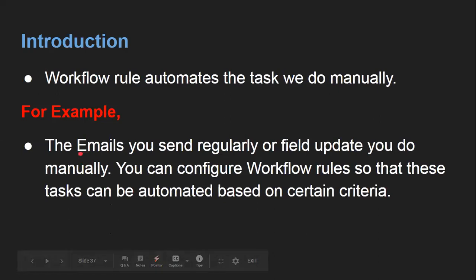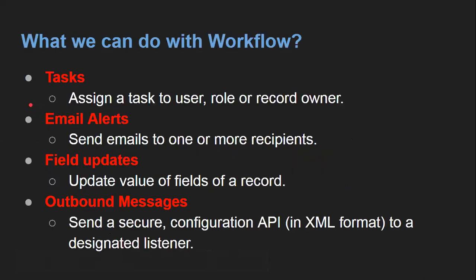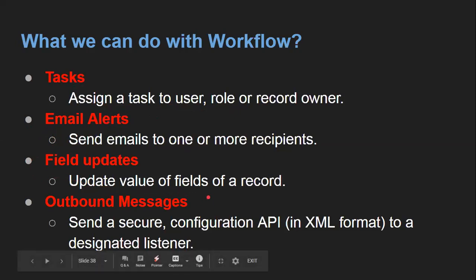Here you can see two things are mentioned: emails and field update. These are two key features that we can implement automatically with the help of workflow rules. So these four things we can do automatically: First, you can create tasks and assign a task to a user, role, or record owner. Second, you can send email alerts to one or more recipients. Third is field updates — you can update the value of fields of a record. And fourth is outbound messages — you can send a secure configuration API in XML format to a designated listener.